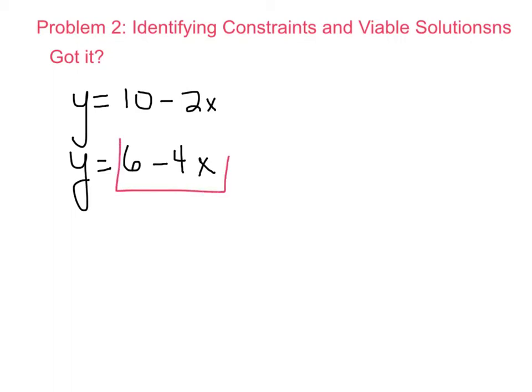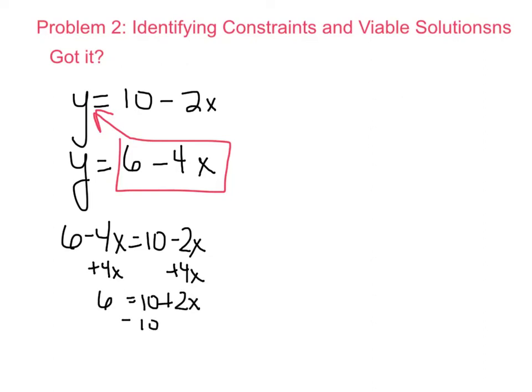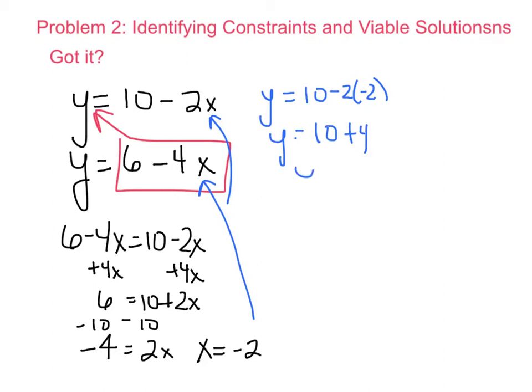Easily substitution, plug it in. So that would give me 6 minus 4X equals 10 minus 2X. I'm going to add 4X to both sides. 6 equals 10 plus 2X. Subtract 10. That would be 2X equals negative 4. That gives me an answer of negative 2. I'm going to plug the negative 2 in for either here or here. It doesn't matter. So let's say I do Y equals 10 minus 2 times negative 2. Y equals 10 plus 4. That gives me Y equals 14. So that means my answer is negative 2, 14.